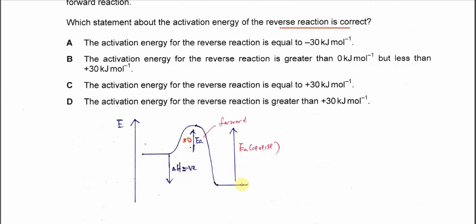If let's say now the products try to go back and form the reactant, it has to overcome this energy. So this energy or this enthalpy is the activation energy. Therefore we know that the activation energy for the reverse reaction must be greater than 30 kilojoules per mole.